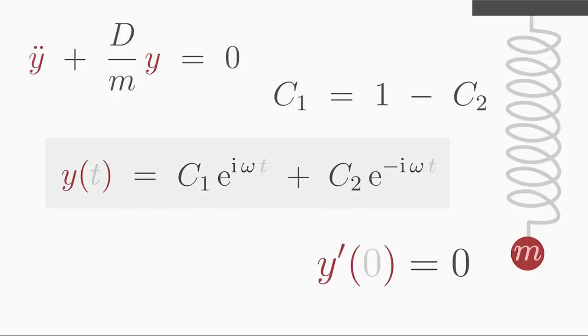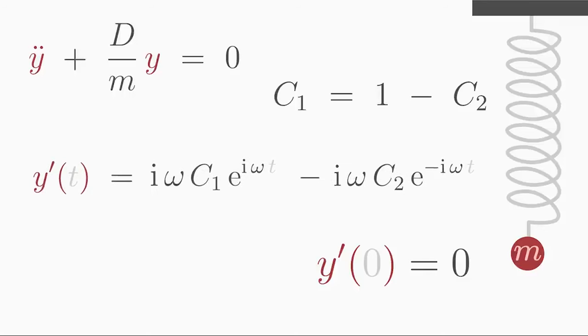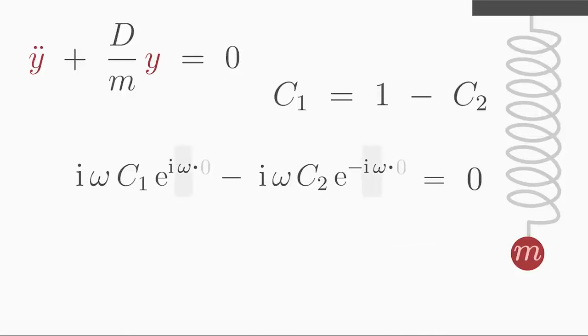So let's differentiate our general solution with respect to time t. The factor in front of t becomes a factor in front of the exponential function. And then we insert the second initial condition into the derivative. The exponential functions become 1 and the factor i omega cancels out. Rearranging for c2, we find out that c2 is equal to c1.